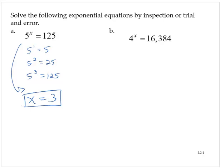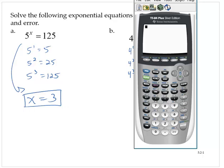Exercise b. 4 to the x is 16,384. Now, this one's a little bit tougher. So we could try for a while and say, well, I know that 4 to the first is 4, 4 to the second is 16, 4 to the third is 64. And then you might get stuck, depending on how well you know your multiplication. So let's go to a calculator for this one.